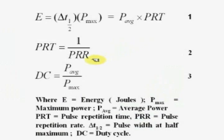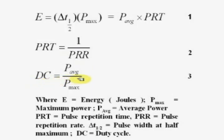From the oscilloscope measurements you can get the energy, and from that you can get P_max. Once you know P_max and the energy, the reciprocal of PRT gives the pulse repetition rate (PRR), and the duty cycle (DC) can be calculated as well.